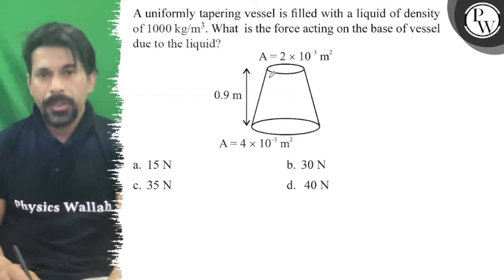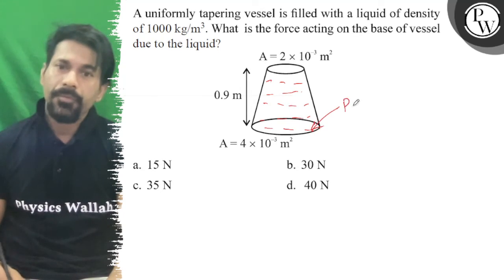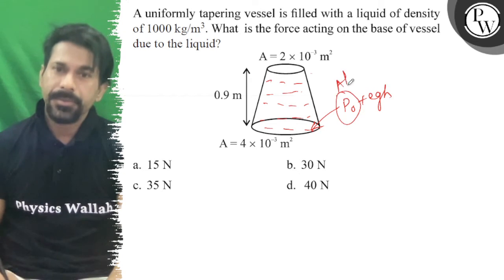Due to liquid, we don't have to involve atmospheric pressure. So if we don't involve atmospheric pressure, the pressure will be p0 plus ρgh. Here, p0 is atmospheric pressure and ρgh is due to liquid.